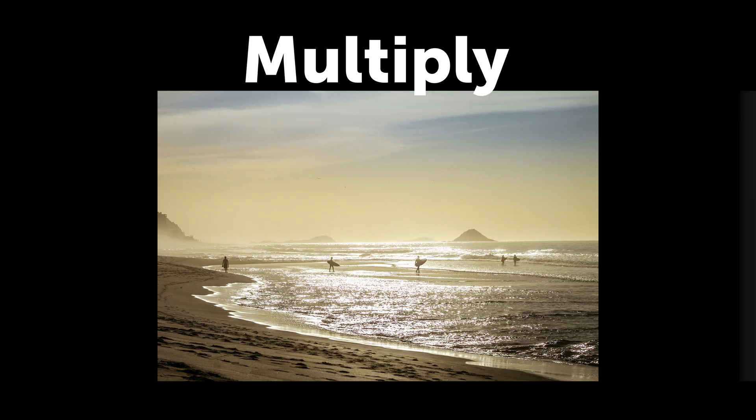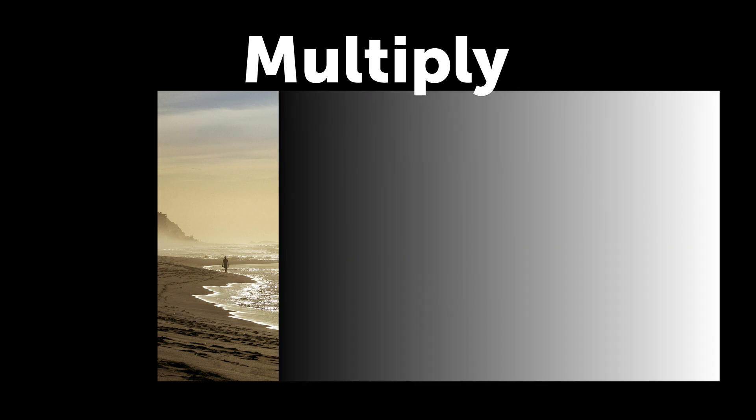If you want to apply a blending mode to certain sections, or remove it from certain sections, it's best to use masks. We did a video on masks in the past, so I recommend checking that out — you'll also find a link in the description. The next mode is Multiply. Multiply is based on the same principle, but darkens much more than Darken.